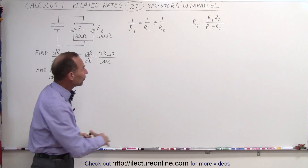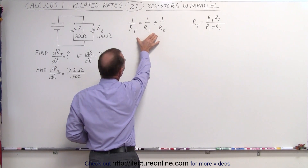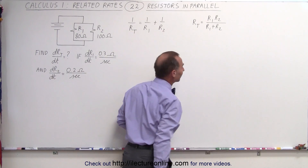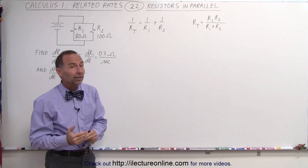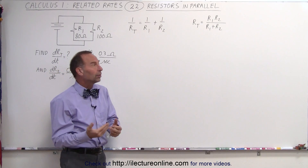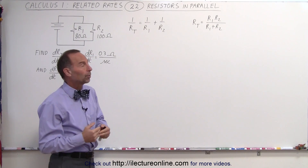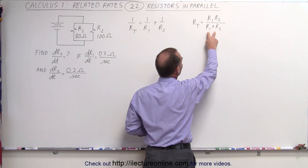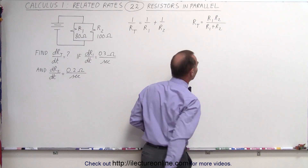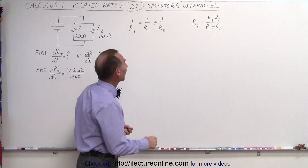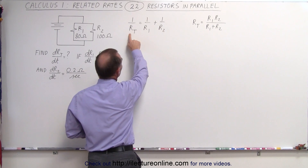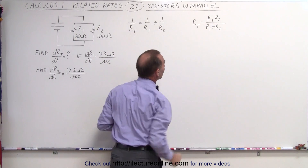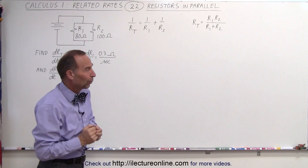We can also solve this equation algebraically for R_total, giving us what's called the product-over-sum form of the equation: we multiply the two resistors in the numerator, and add them in the denominator. We're going to find dR/dt using both equations and then compare the results to one another — they should, of course, be the same.